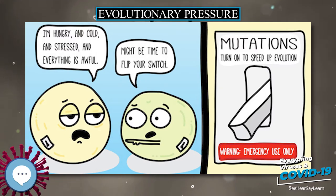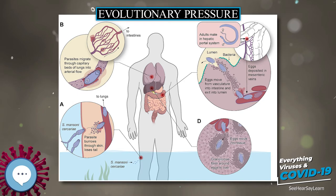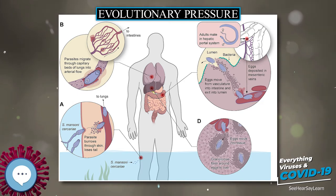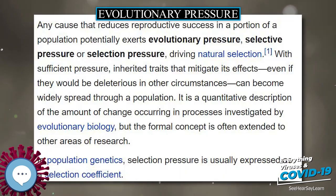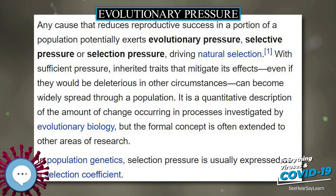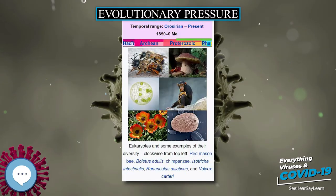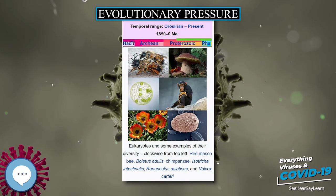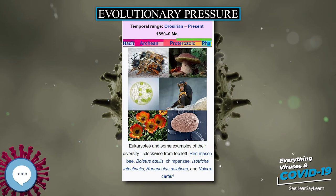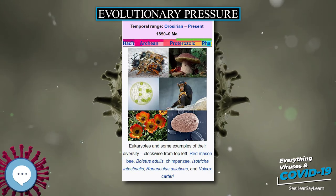Nosocomial Infections: Clostridium difficile, a gram-positive bacteria species that inhabits the gut of mammals, exemplifies one type of bacteria that is a major cause of death by nosocomial infections. When symbiotic gut flora populations are disrupted, for example by antibiotics, one becomes more vulnerable to pathogens.